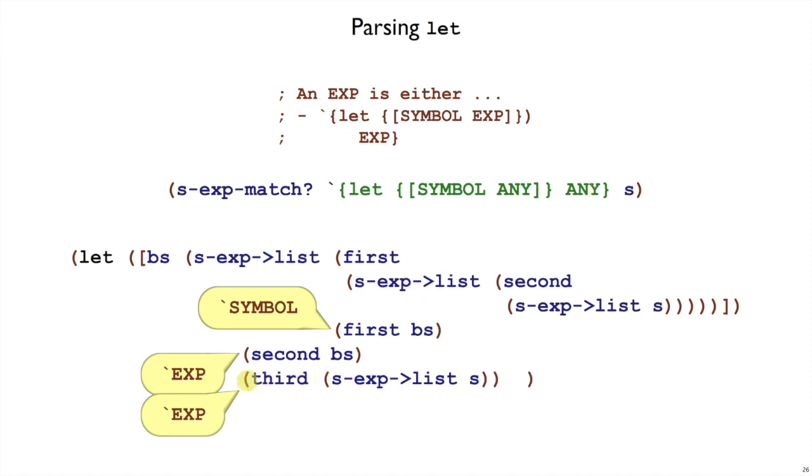So we've got the body s-expression, the right-hand side s-expression, and we have the name as a symbol, a symbol-like s-expression. We need to convert that to a symbol with s-x-arrow symbol. Now we have the three pieces we want.